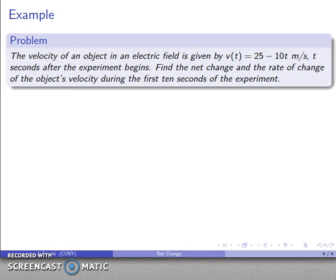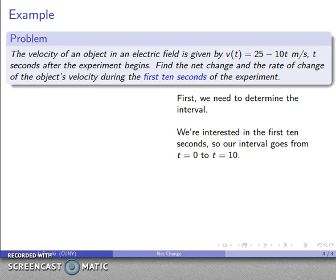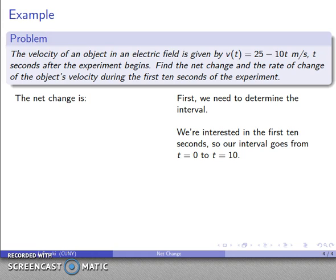What if I have the formula for a function? Here the velocity of an object is given by V(t) = 25 − 10t meters per second, where t is seconds after the experiment begins. I want to find the net change and the rate of change of the object's velocity during the first 10 seconds. We need to determine the interval: since t is seconds after the experiment begins, the interval goes from t = 0 to t = 10. That covers the first 10 seconds of the experiment.